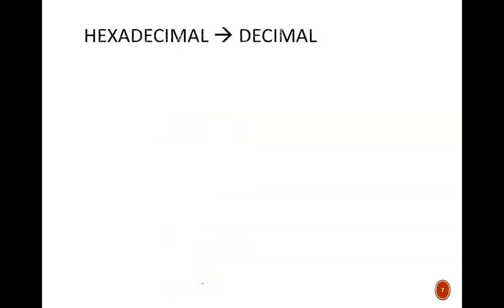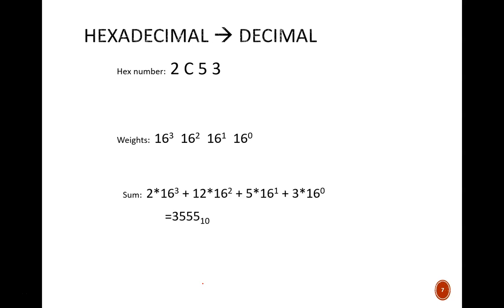Now, going from hexadecimal into decimal, I have a given hex number. I need to find the weights associated with those hex digits. 16 raised to the 0 for the rightmost digit. 16 raised to the 1 for the next digit. 16 raised to the 2 for the next digit. 16 raised to the 3. And then I've reached my last digit.